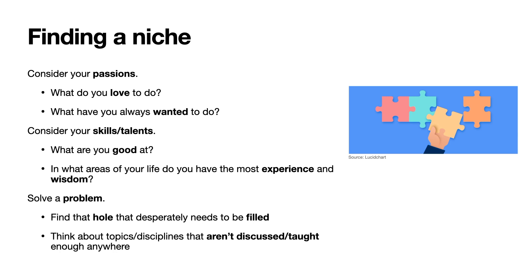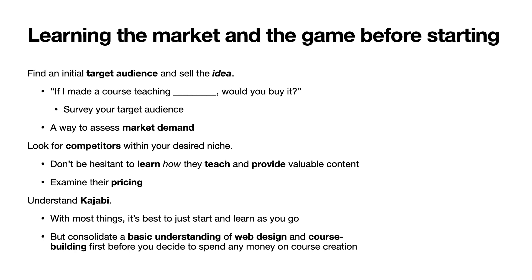Basically, we want to change the lives of our students. If you can think of something you can teach that you're passionate about and that will change others' lives, that's probably the niche you want. You'll want to find an initial target audience and sell that idea — survey your target audience and ask if they'd buy a course teaching your topic. This is the way to assess if there's market demand, because the worst thing is to create a course and realize no one wants to invest in it. Look for competitors within your desired niche — don't be hesitant to learn how they teach and provide valuable content. You can purchase their course and go through it, or look at their curriculum, see how they structure their course, and look at their pricing to see if you can make something competitive or similar.